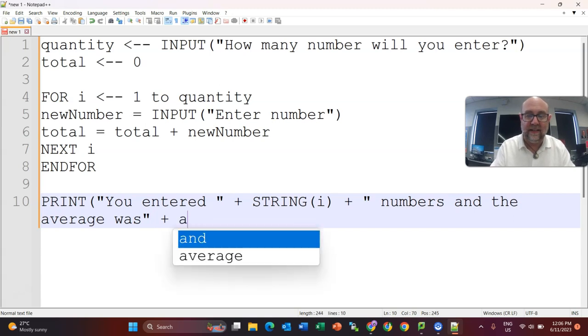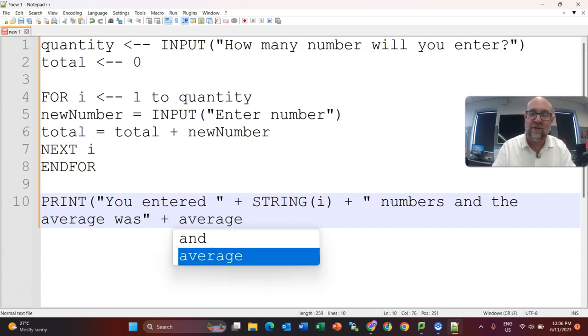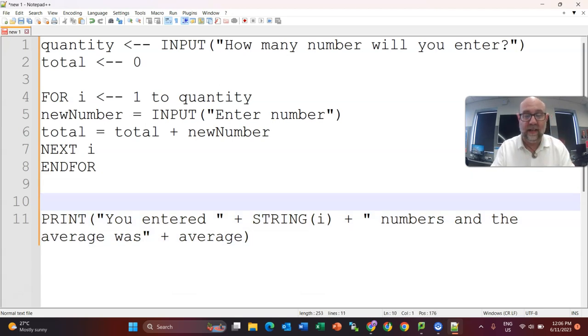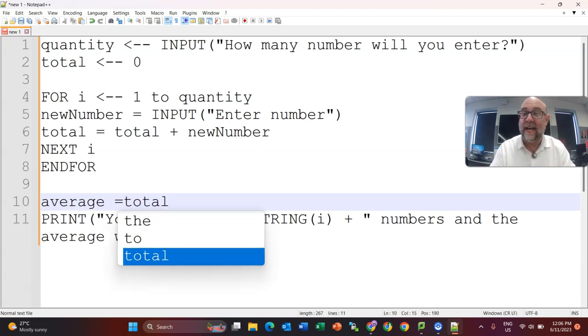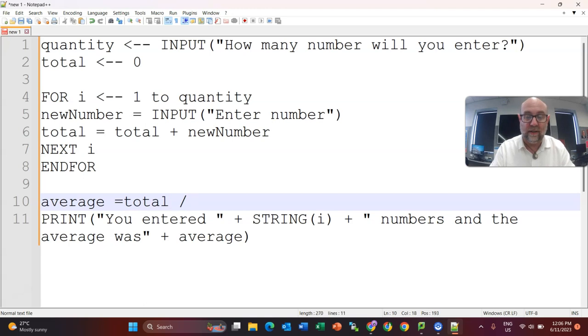and I'm going to say that it's this variable here called average, which I have not yet worked out. So, I'm going up here, and let's work out what average is. Well, average is going to equal the total, which I have because I've been counting it up, divided by the quantity. There we go.